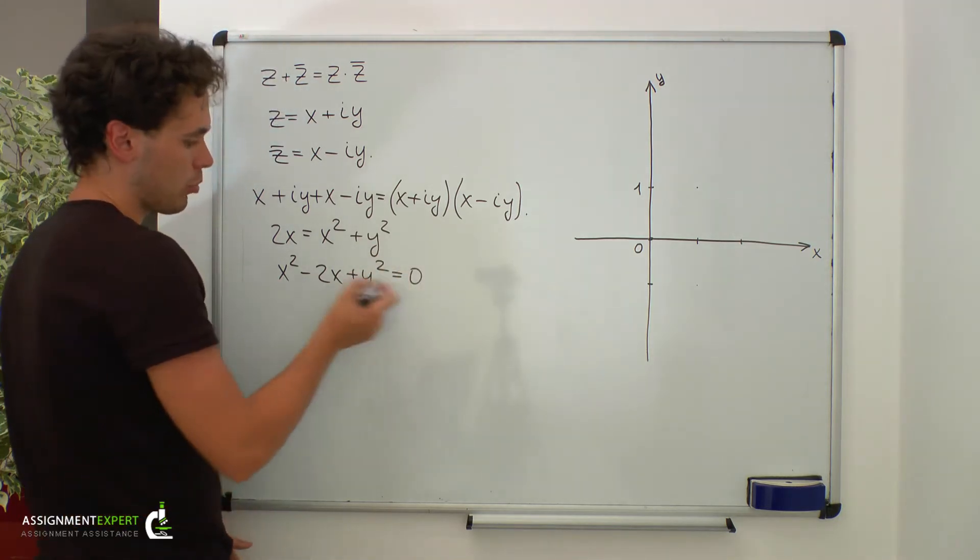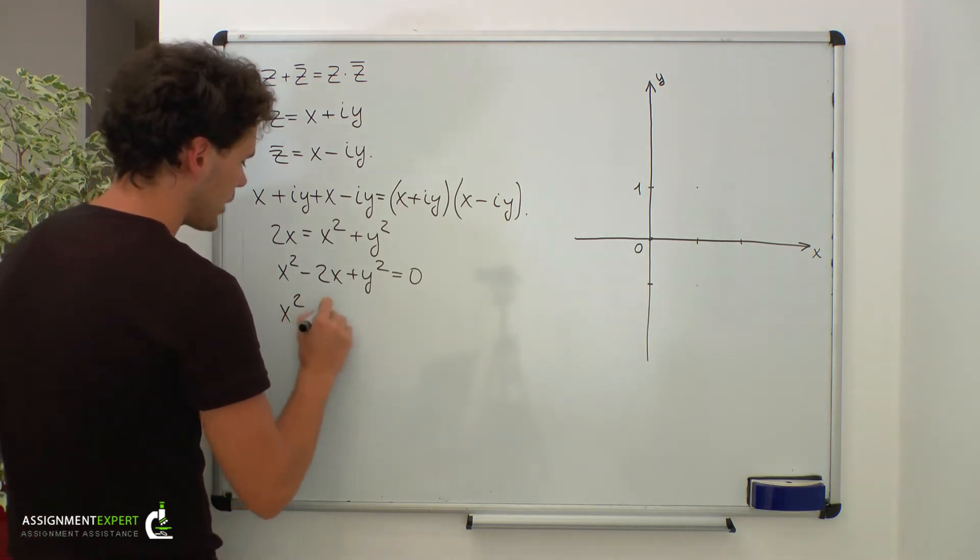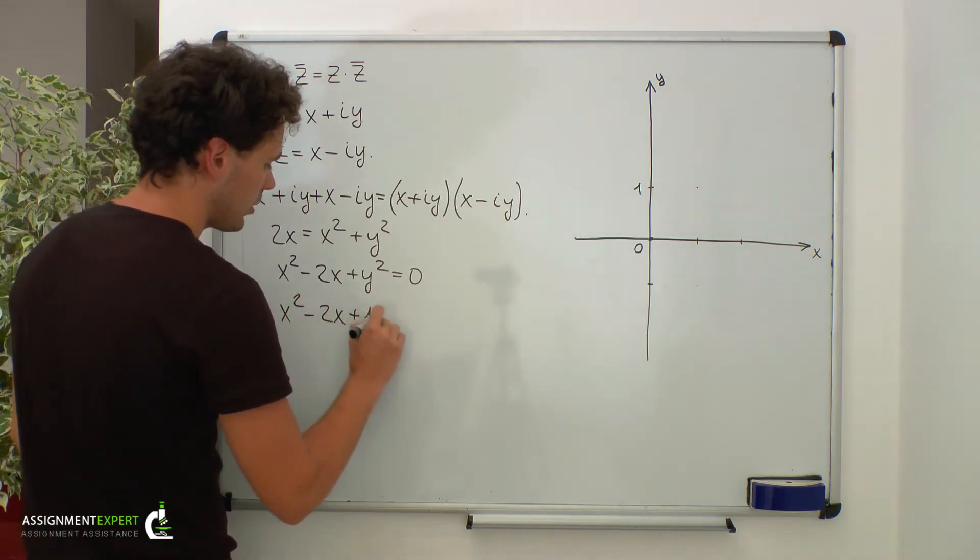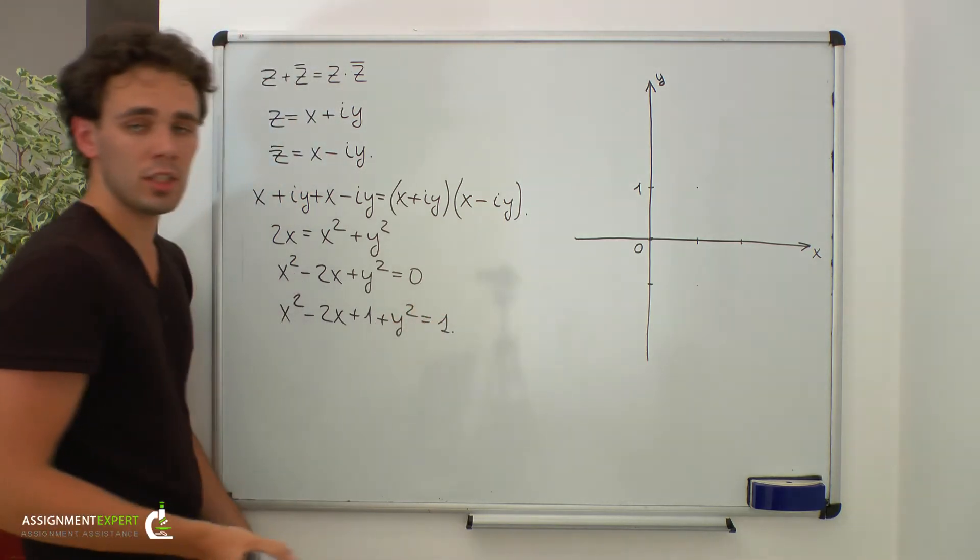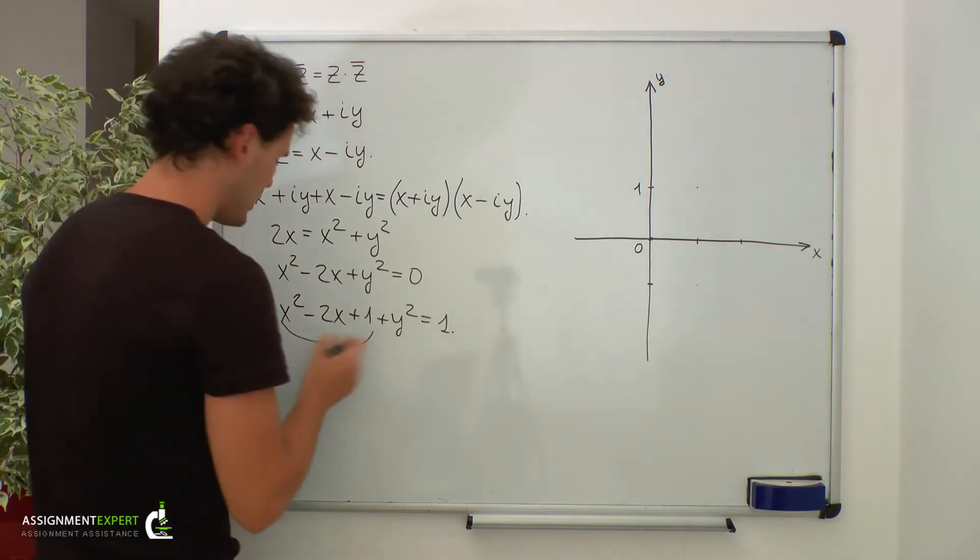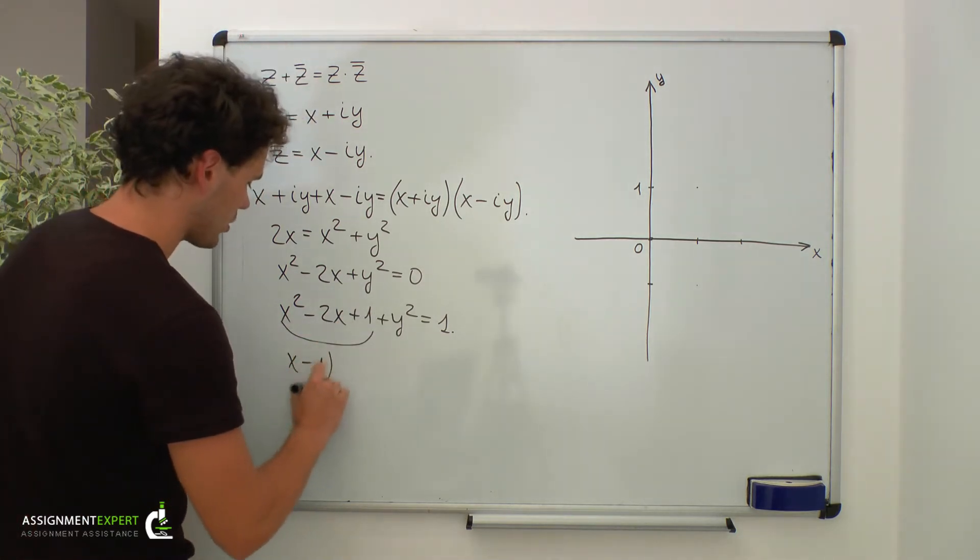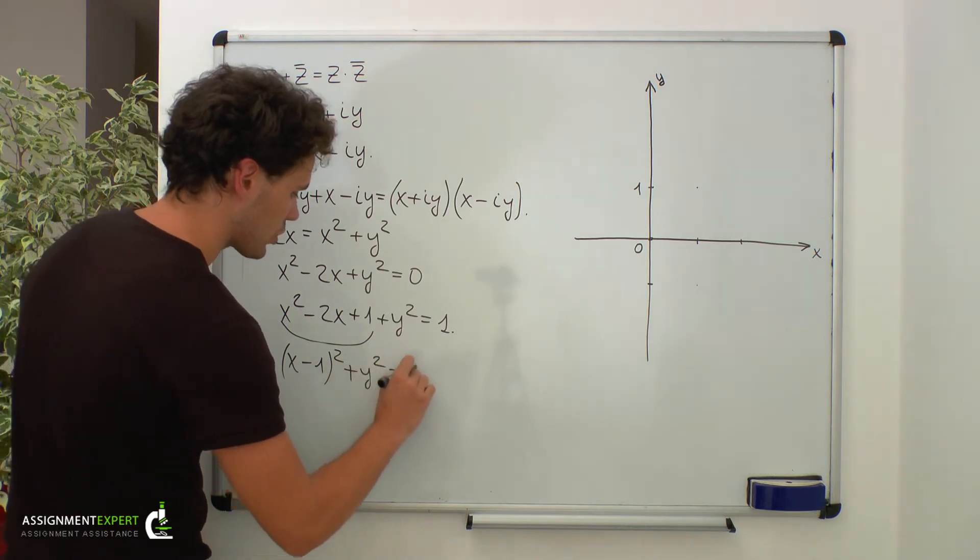And now we will add 1 to both sides of the equation. So we get x squared minus 2x plus 1 plus y squared equals 1. Notice that we have a complete square of x minus 1. So this is actually x minus 1 squared plus y squared equals 1.